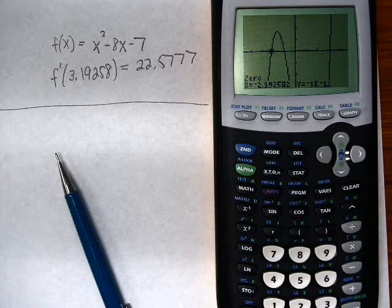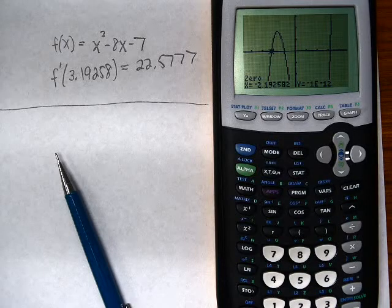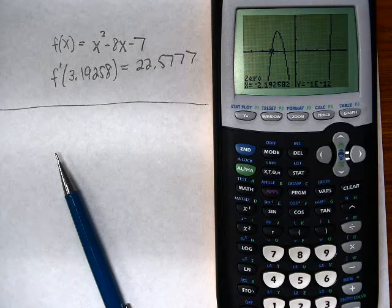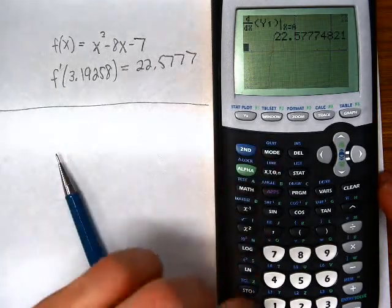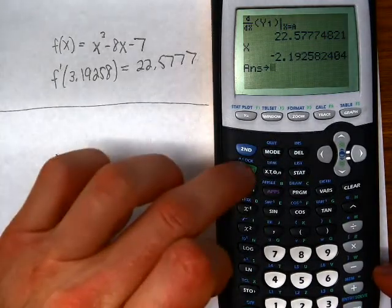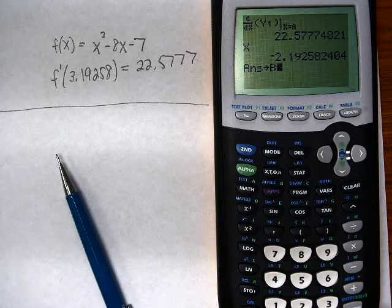So there's the leftmost zero of that function, negative 2.192582. I'm going to come out here, verify that my x-value is still that, that's good. And I'm going to store that in variable b.